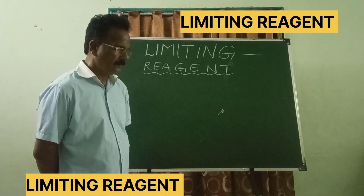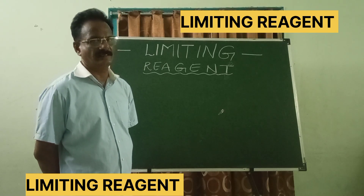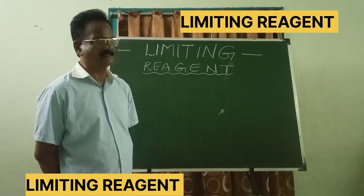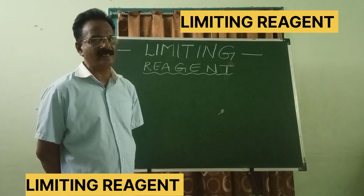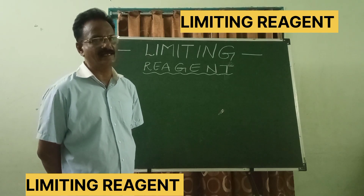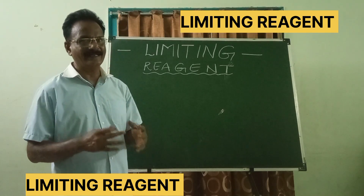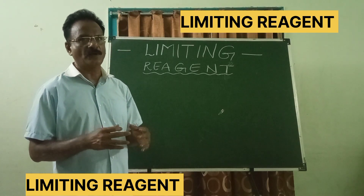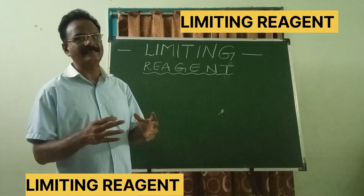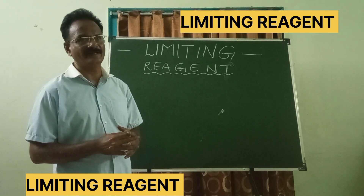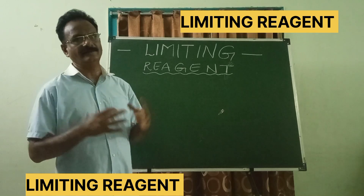For a chemical reaction to happen, in most cases there would be at least two reactants. Most reactions require a minimum of two reactants to produce a product.